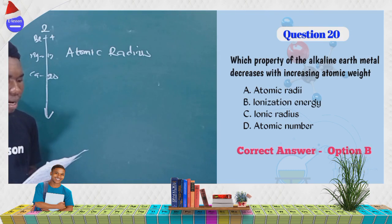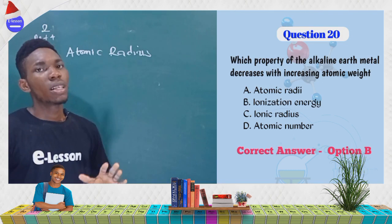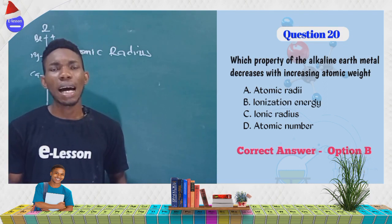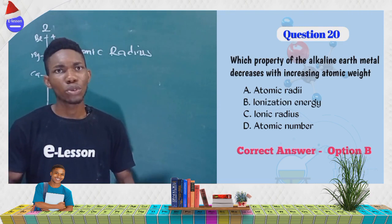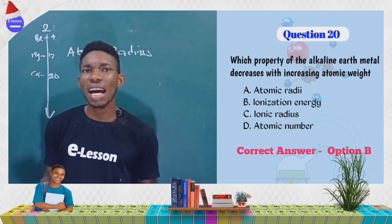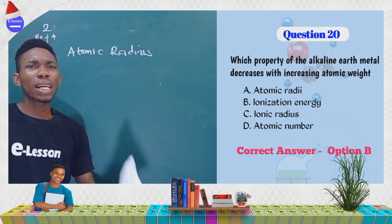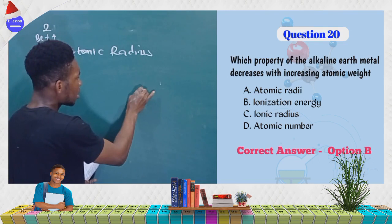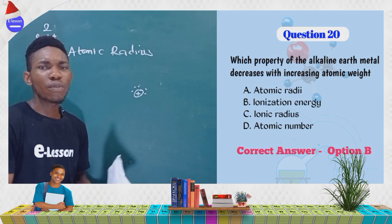Ionization energy decreases down the group. Ionization energy is the energy required for an atom to lose an electron and form a positively charged ion. As you go down the group, the atomic size increases and the effective nuclear charge experienced by the outermost electrons decreases, because the electrons are farther from the nucleus.